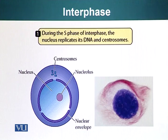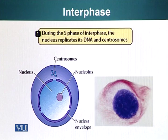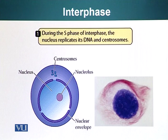During interphase you have the nuclear membrane and the nucleolus, and there is nothing really dramatically different about these cells whether they are in S, G1, or G2. So once mitosis starts, we know things change.